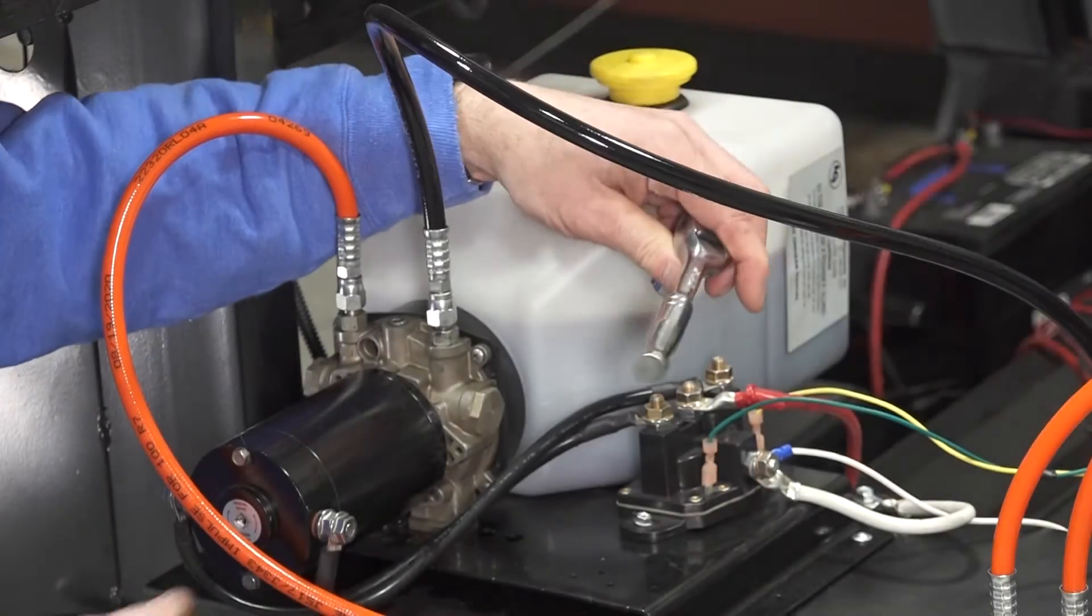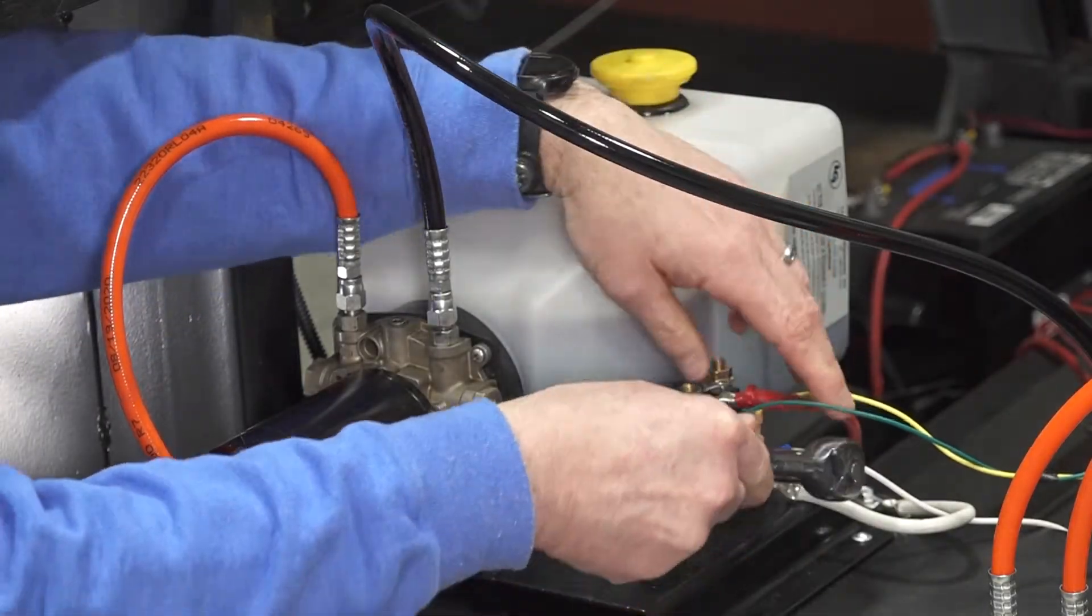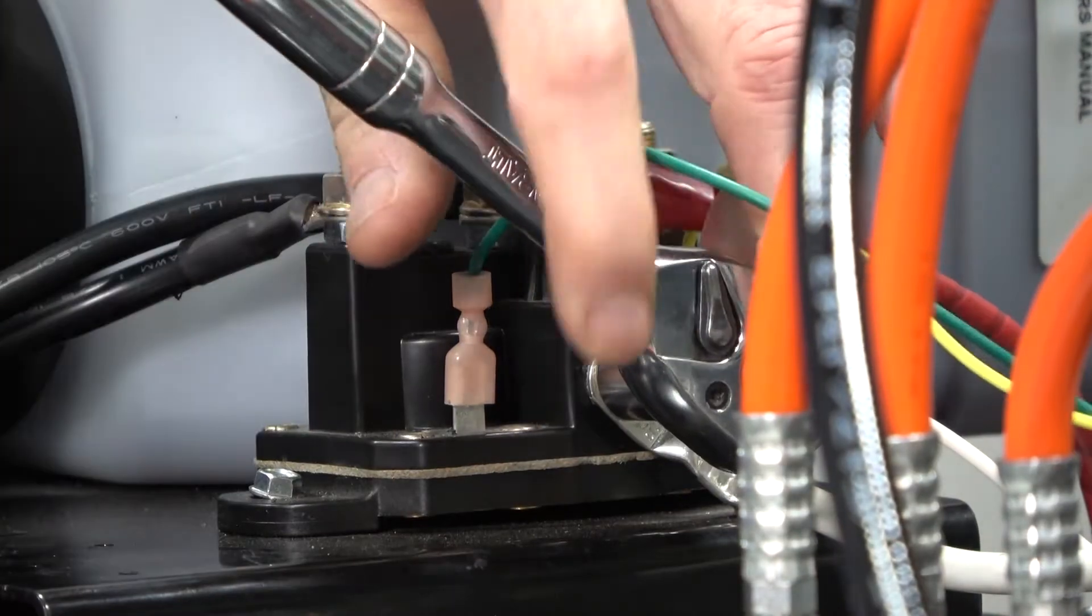First, we need to disconnect power from the battery. Now we can remove the ground wires from the ground post.